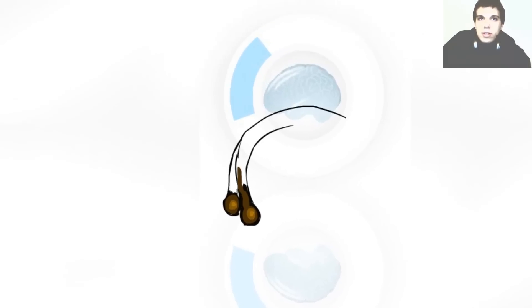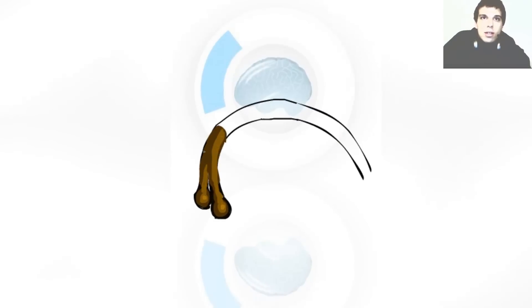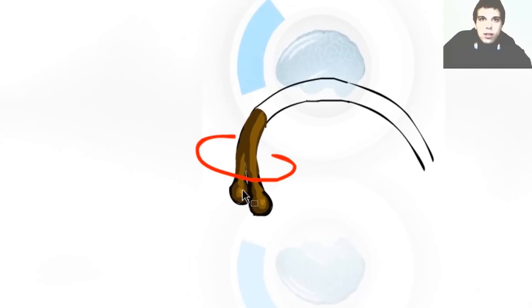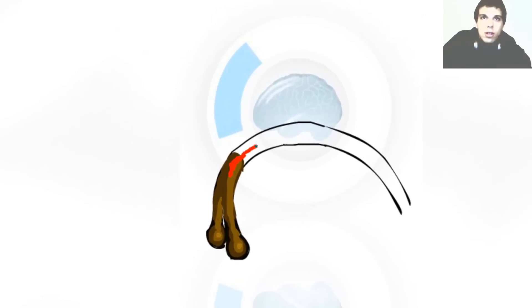Then comes the fornix. The fornix is a C-shaped bundle of fibers. This is the anterior pillar of fornix. These over here are the mammillary bodies, and then fornix 1 and fornix 2. The part where your fornix joins over here is called the body of fornix.